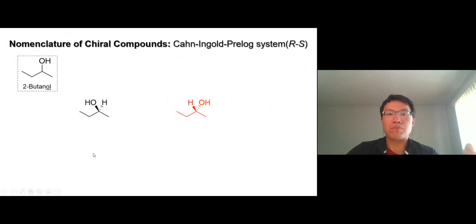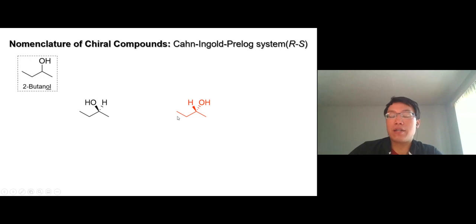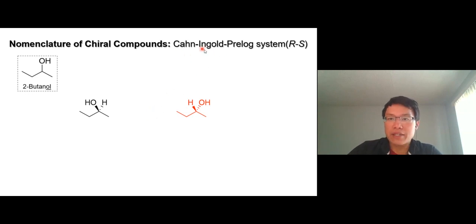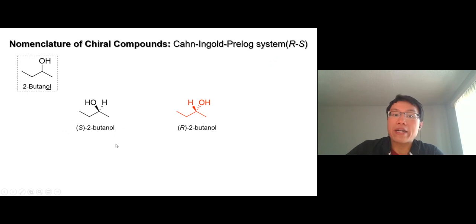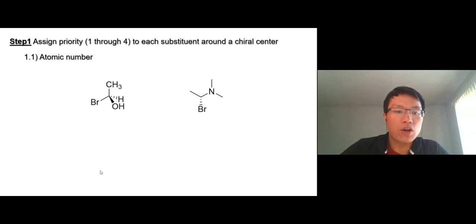Now a little bit about naming enantiomers. For example, these two molecules can be written as two isomers — they are enantiomers. We have to be able to call them differently for communication purposes. The system we're going to use is still the IUPAC system, specifically the RS system developed by three scientists: Cahn, Ingold, and Prelog. On the left we call it S, on the right we call it R. Here's how we determine whether it's S or R.